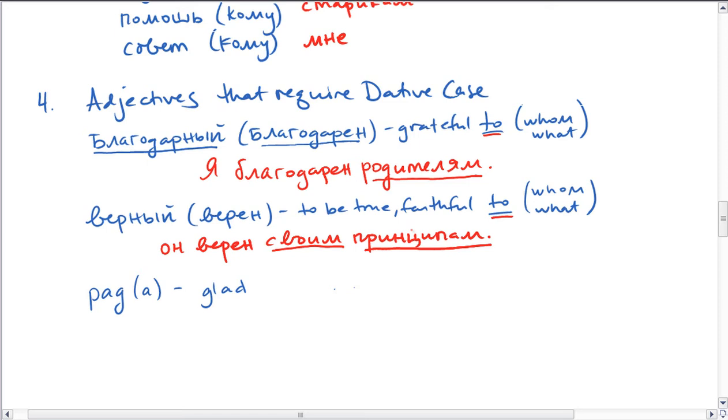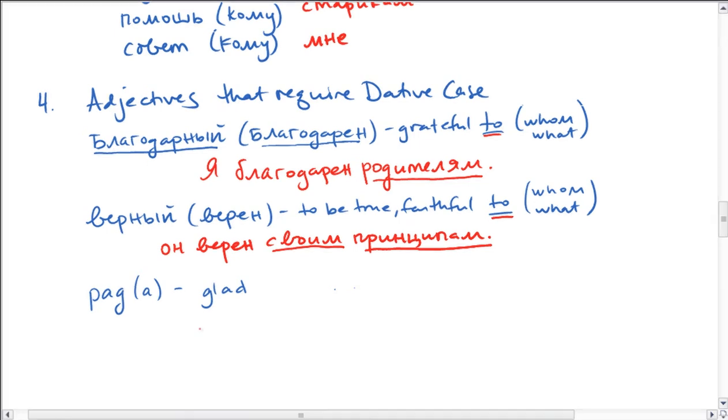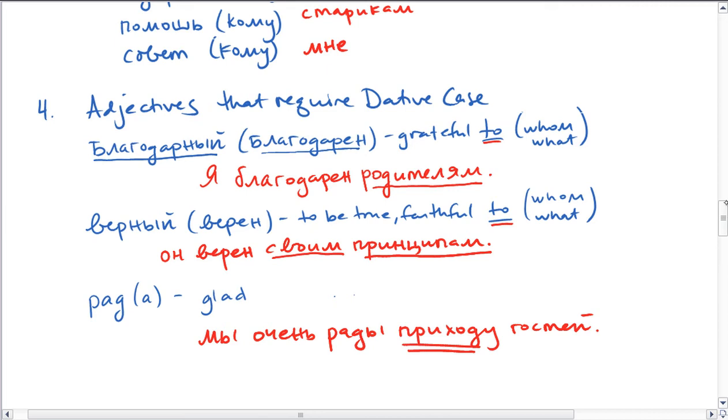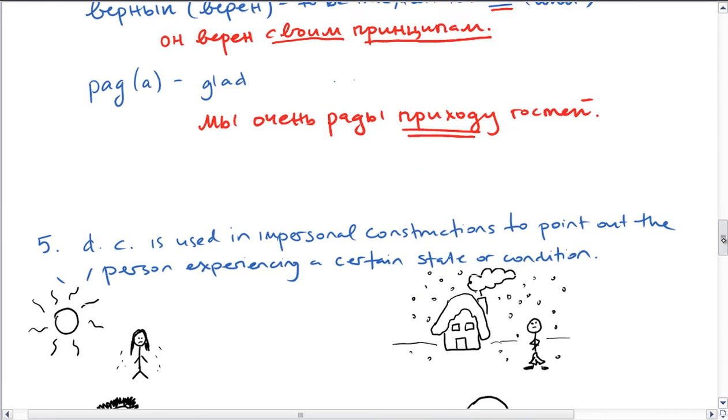Or рад, рада, to be glad. So мы очень рады приходу гостей - we're glad for the arrival of the guests. And there are other adjectives that require the datum case, but these are ones that you've probably already come across or that are useful.